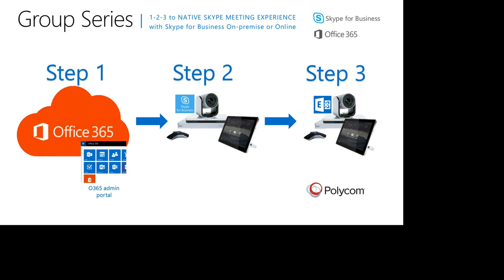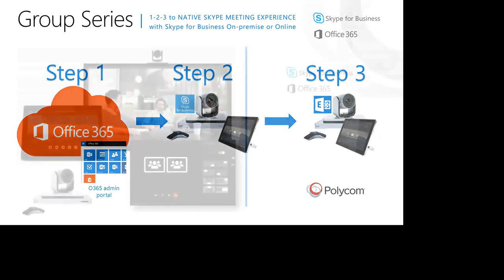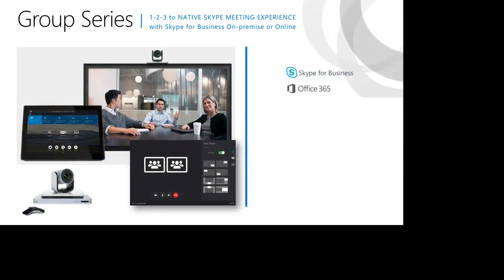This is a one-two-three easy step process. First, we'll go through the admin portal where I will create a Skype for Business user which we will use on the Group Series. In step two I will show you the exact process on the Group Series through the web management. In step three we will also register to the Exchange Online environment. So in three steps, all the setup is done to register your Group Series.